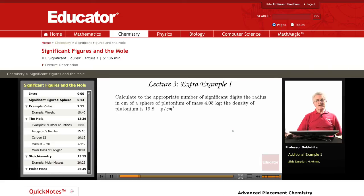Now we have the mass and we have the density of plutonium. And that means we can calculate the volume of that sphere. Remember, density equals mass over volume, or volume equals mass divided by density.